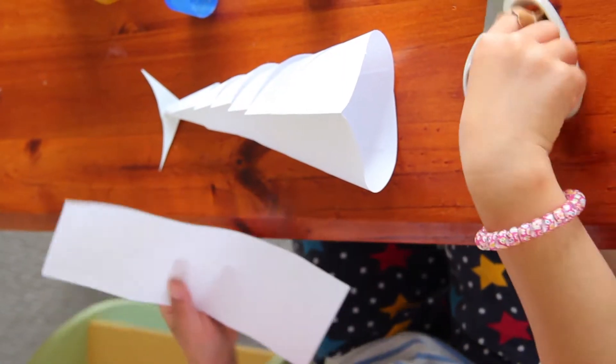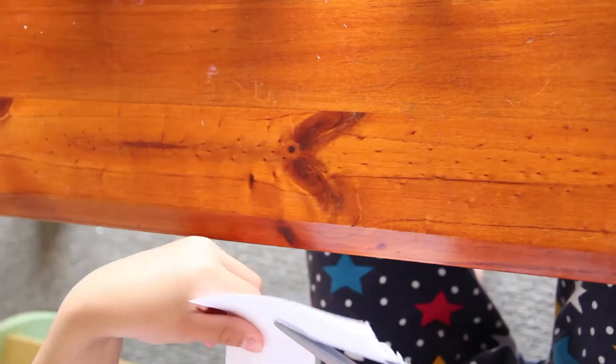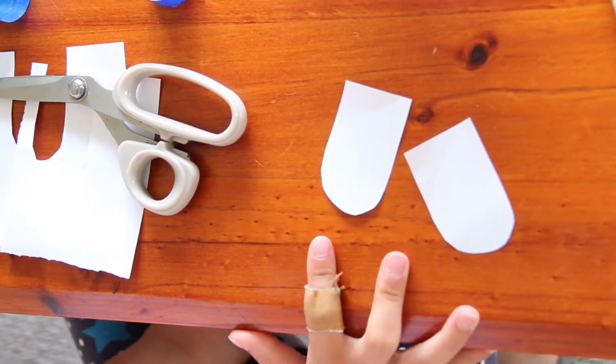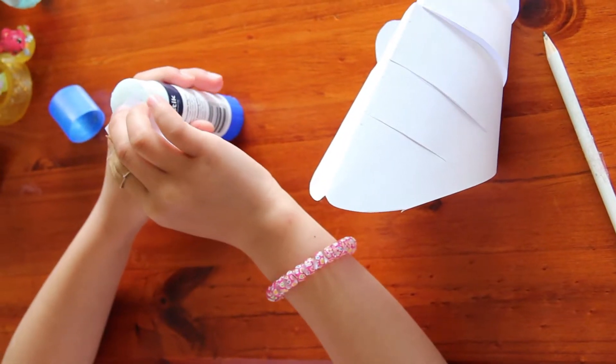Get some other paper and cut two fins. These two will be your fins. Flip your fish over and stick on your little fins. Do the other one as well.